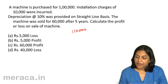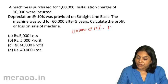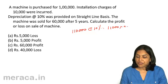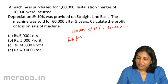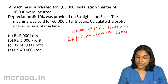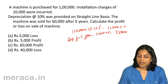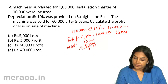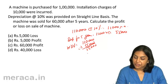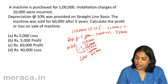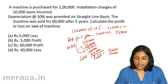Depreciation is provided at 10% on straight line basis, so the amount of depreciation is Rs. 11,000 each year. The machine was sold for Rs. 60,000 after 5 years. Depreciation for 5 years = 11,000 × 5 = Rs. 55,000. The written down value of the machinery = Rs. 1,10,000 − Rs. 55,000 = Rs. 55,000. It is sold for Rs. 60,000, so there is a profit of Rs. 5,000. The correct answer is B.